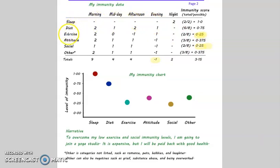Sleep, diet, exercise, attitude—these are activities we do that boost our immune system. So, of course, I don't sleep during the day, but at night, I sleep really well. So I got two out of two possible. I got a perfect one. I plotted that on my chart.